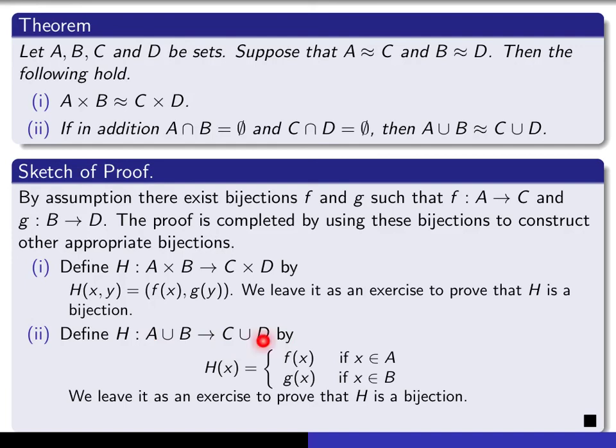And if it happens to be in D, if the Y happens to be in D, we can use the surjectivity of G to produce an element in B for which G maps to it. So either way, we can produce an element in the domain which maps to any element of C union D, and that would show that the mapping is surjective.